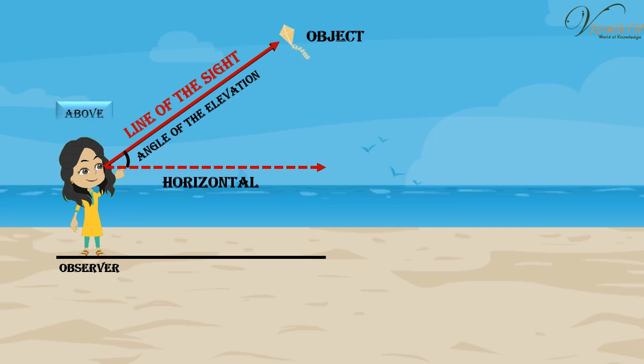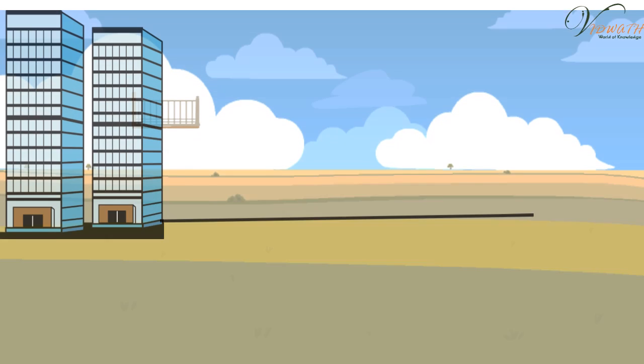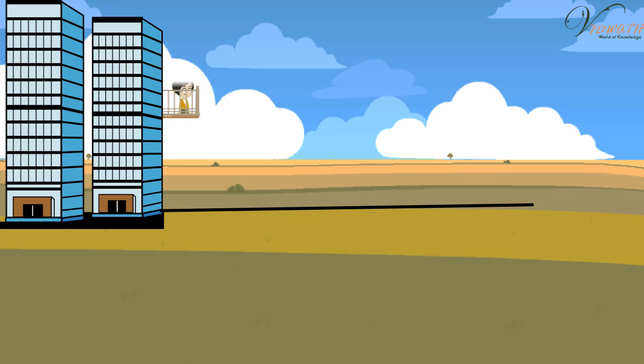That is the case when we raise our head to look at the object. Now consider the situation given in Figure 8.2. The girl sitting on the balcony is looking down at a flower pot placed on a stair of the temple.